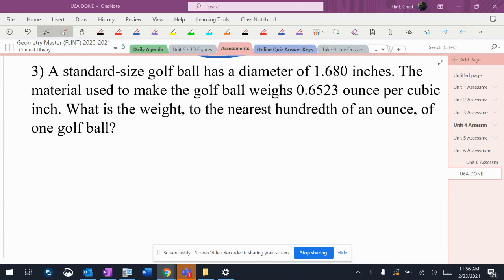A standard-sized golf ball has a diameter of 1.680 inches. The material used to make the golf ball weighs 0.6523 ounces per cubic inch. What is the weight to the nearest hundredth of an ounce of one golf ball?